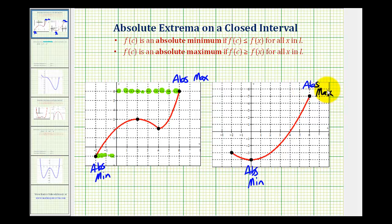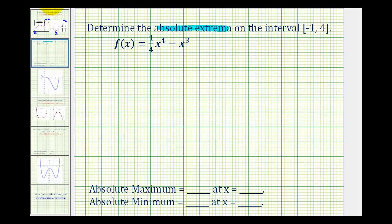So the idea here is to determine the absolute max and min. We do have to determine the function values of the critical numbers and the endpoints. So we'll start by determining the critical numbers of the given function by finding the first derivative.